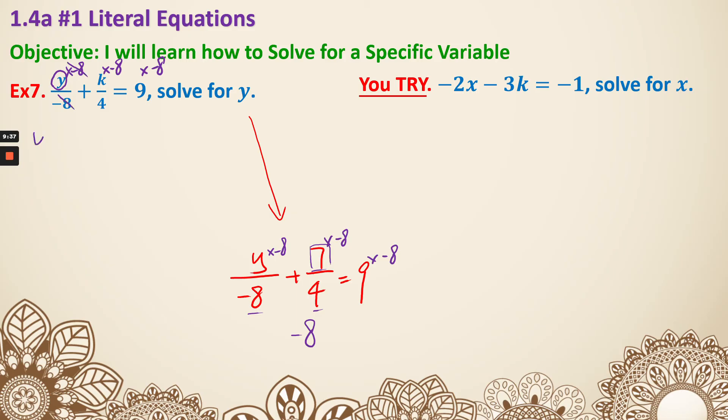First part they cancel, that would give me y. And the next part, if you're having trouble dealing with that, k/4 times -8. You can treat -8 as -8/1. k/4 could just be k/4. The top would be -8k, the bottom would be 4, which gives you -2k. The right side, 9 times -8, that's -72. So I add 2k on both sides. y = 2k - 72.